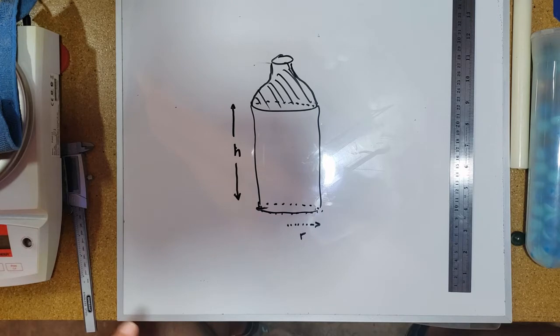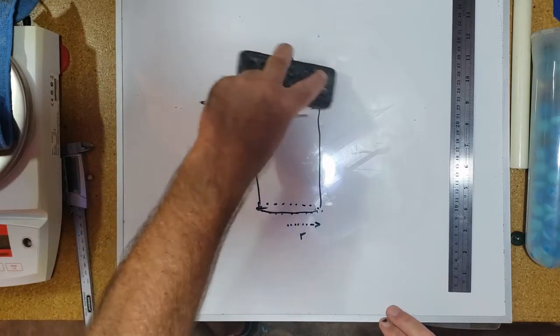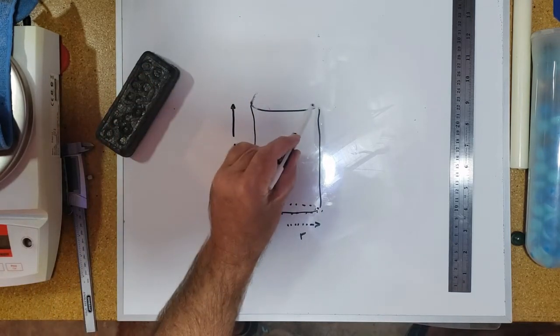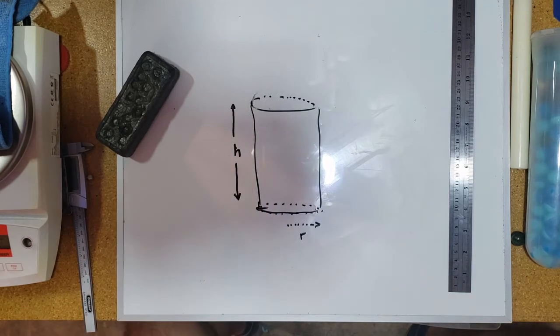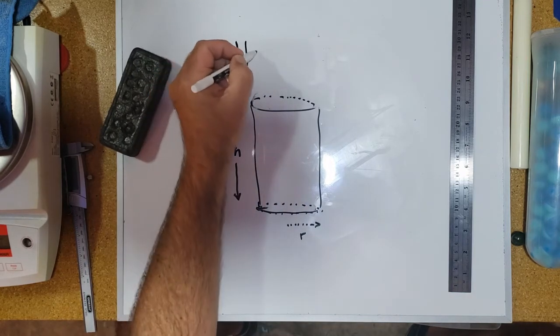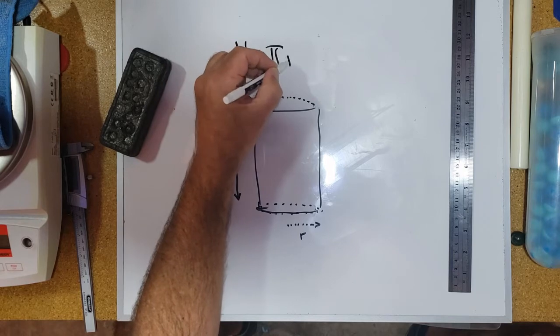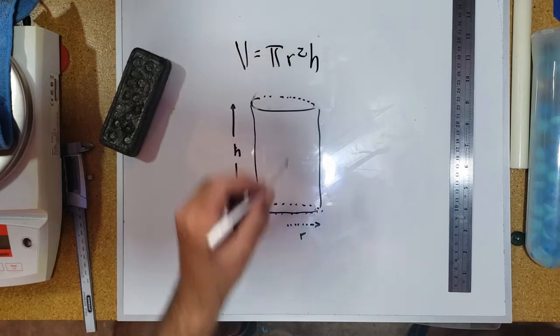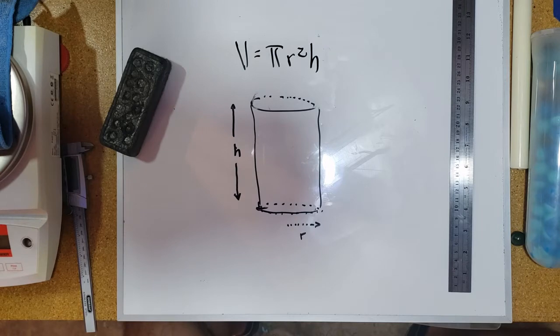It won't be a perfect calculation, but it'll give us a ballpark. So if we just look at this water bottle as a cylinder, we're going to have to make two measurements: one down here for the radius and one here for the height.